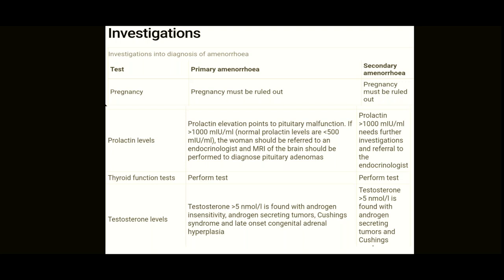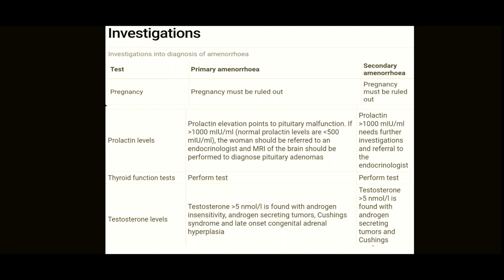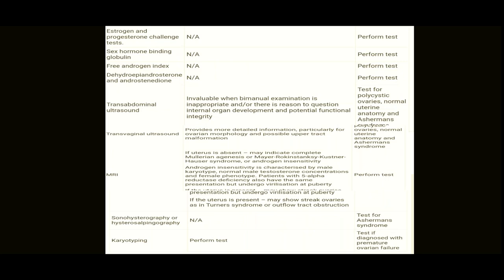Do a thyroid function test. Check testosterone levels — elevated testosterone is suggestive of androgen-secreting tumors or Cushing's syndrome. For secondary amenorrhea, perform an estrogen and progesterone challenge test: give estrogen and progesterone, withdraw them, and check whether the patient bleeds. Also check sex hormone binding globulin (SHBG) and free androgen index — both useful for secondary amenorrhea in the context of PCOS. Also check DHEA and androstenedione levels.